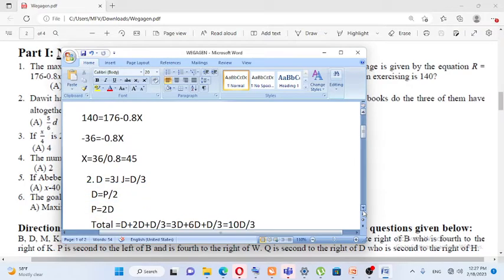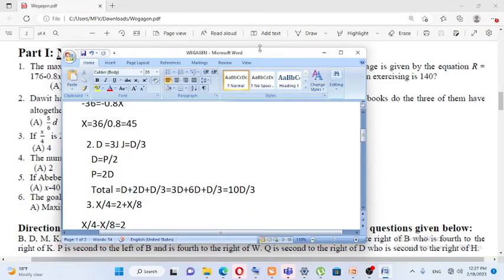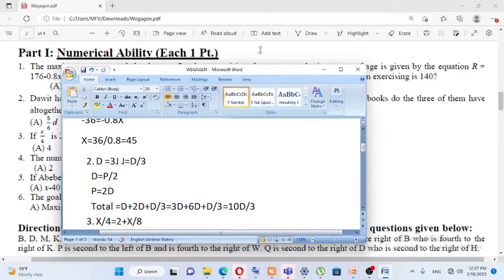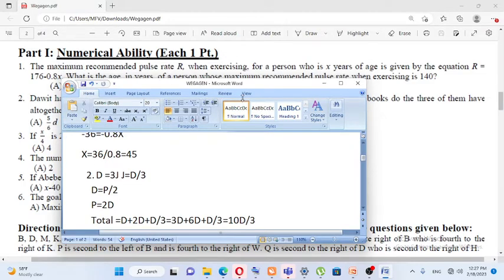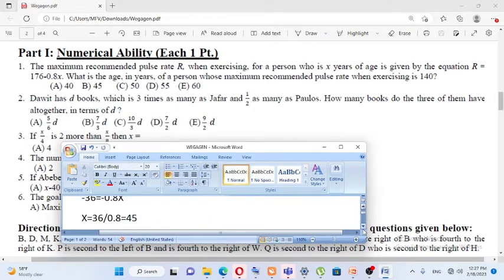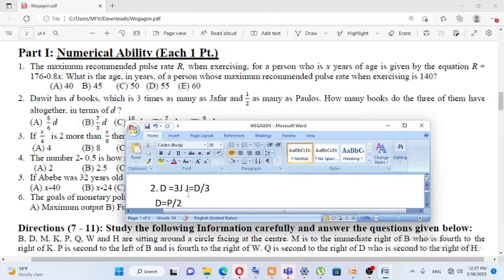D is equal to 155 minus 0.8X. So, if D is equal to 3 times J, D is equal to 3 times J. If D is equal to 2 times J, D is equal to 3 times J.